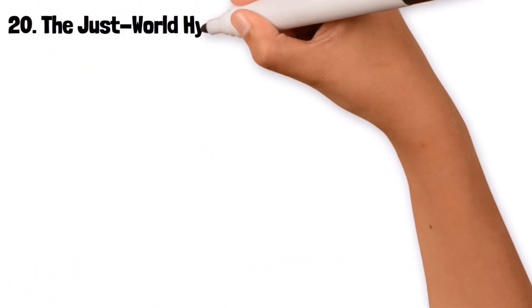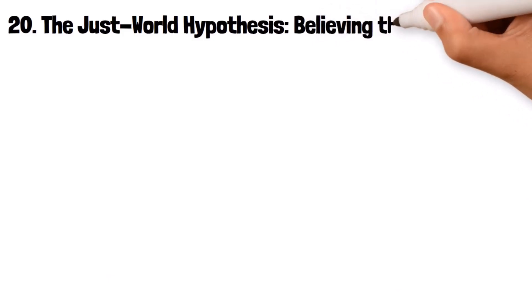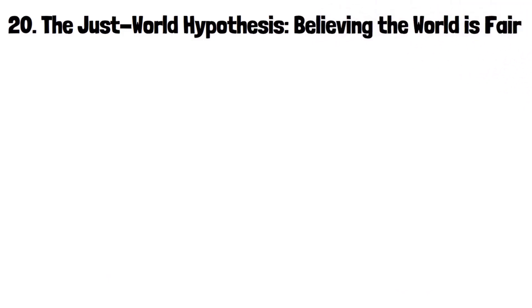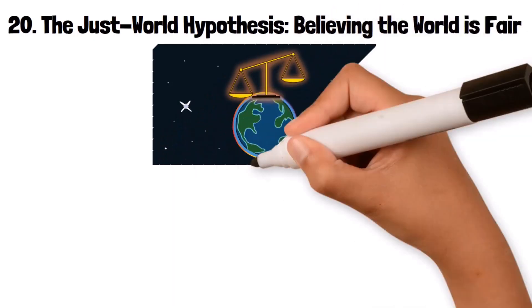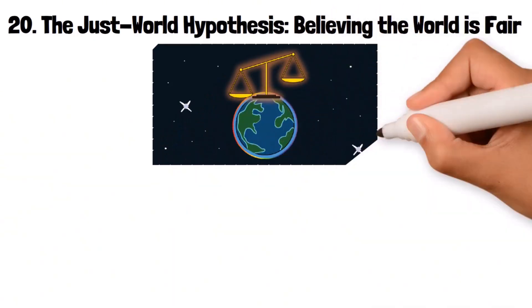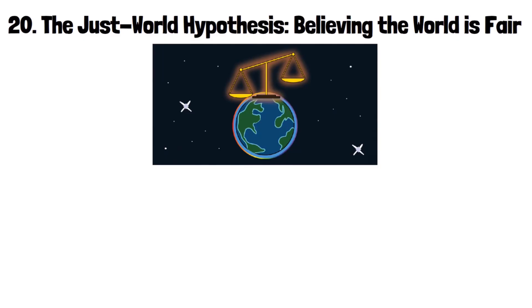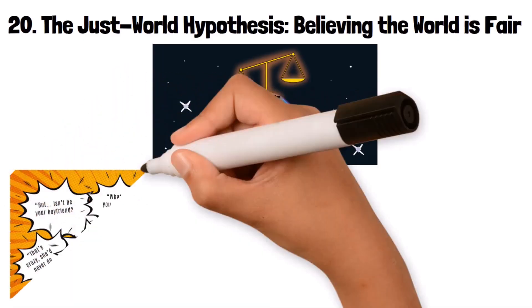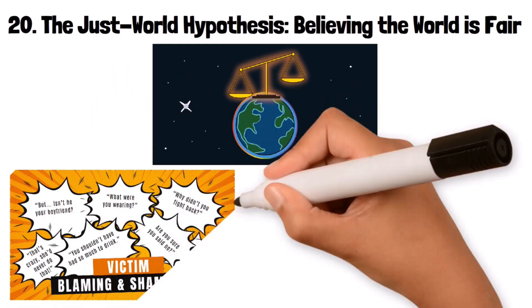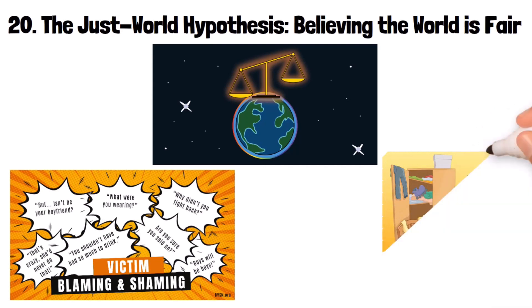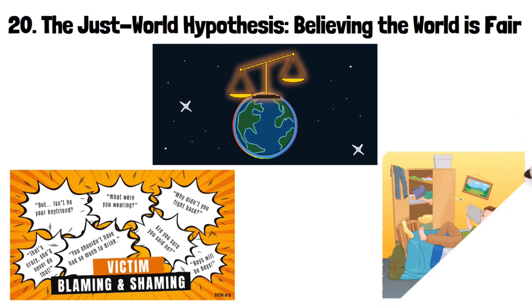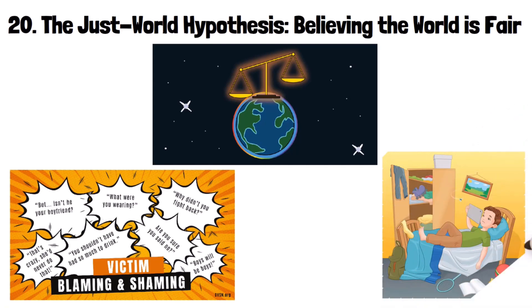20. The Just World Hypothesis: believing the world is fair. The Just World Hypothesis is the belief that the world is fundamentally fair and that people get what they deserve. This bias can lead to victim-blaming, where people assume that bad things happen to others because of their actions or character. For example, someone might assume that a person who is unemployed is lazy rather than considering other factors like economic conditions or discrimination.